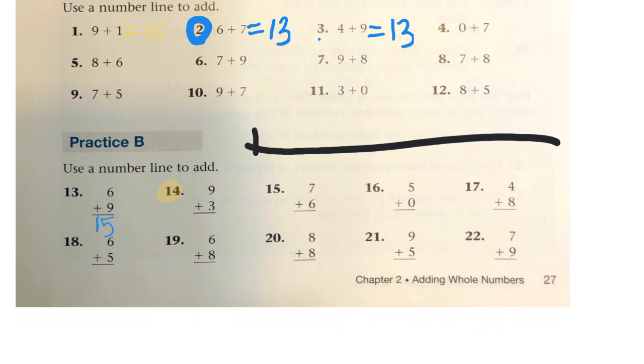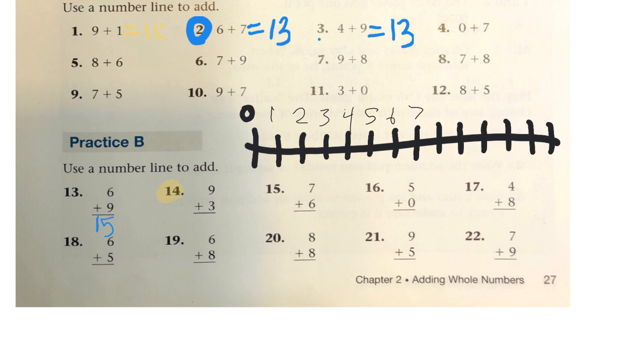So here is 0, 1, 2, 3, 4, 5, 6, 7, 8, 9, 10, 11, 12, 13. And we can write the numbers on there: 1, 2, 3, 4, 5, 6, 7, 8, 9, 10, 11, 12, 13. You can make your number line as big as you want.